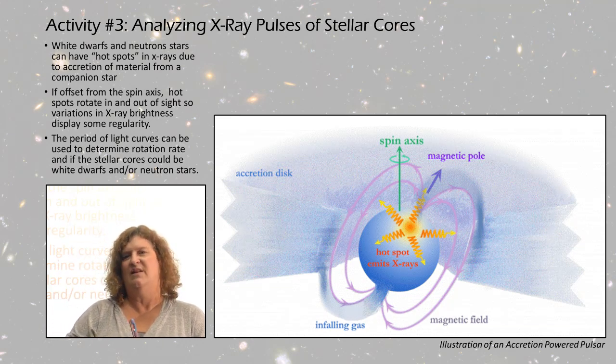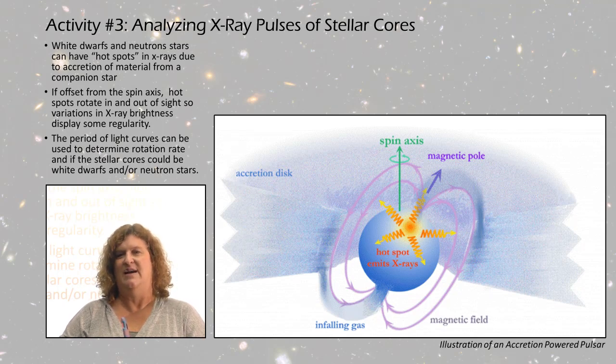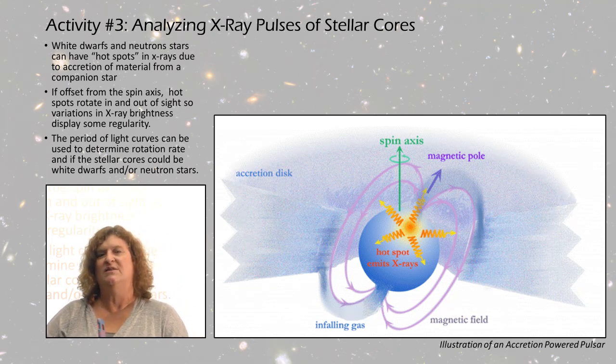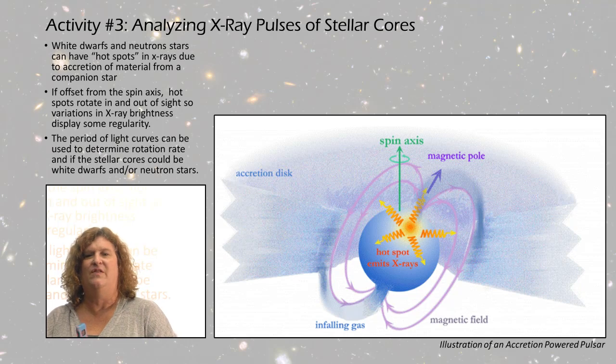If you did a light curve, you would see that at times it looked brighter and at times it looked dimmer as it rotates in and out of your sight. If you can find the period of the light curve, that would also give you the period of the spin rotation.